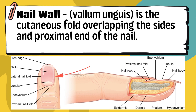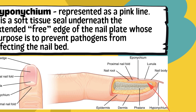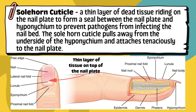Eleventh, the nail wall — vallum unguis — is the cutaneous fold overlapping the sides and proximal end of the nail. It's the skin that slightly covers the sides and base of your nail, protecting the edges and keeping the nail in place. Twelfth, the hyponychium is a soft tissue seal underneath the extended free edge of the nail plate, acting as a barrier to prevent pathogens from infecting the nail bed — essentially stopping germs and dirt from going under your nail. Thirteenth, the solehorn cuticle is a thin layer of dead tissue that forms a seal between the nail plate and hyponychium to prevent pathogen infection.